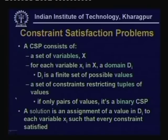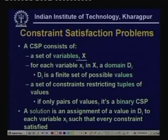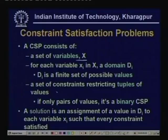Formally, a constraint satisfaction problem consists of a set of variables X = {x1, x2, ..., xn}. For each variable xi belonging to X, xi can take its values from a domain Di, which is a finite set of possible values. We assume today that the domain of every variable is discrete and finite. We are also given a set of constraints. For example, we can have binary constraints: x5 and x7 cannot take the same value.